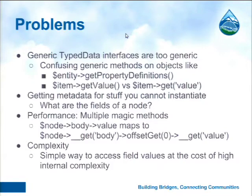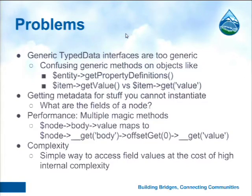Now let's get to the problems. One issue people had with the existing code is that the typed data interfaces, which all those classes implement, have quite generic method names. In the context of specific objects — like when you put them on the entity object and on a field — they don't necessarily make a lot of sense and end up being confusing. Right now we have entity->getPropertyDefinitions() because to typed data everything on an entity is a property, but in entities we call them fields — so that's quite confusing.